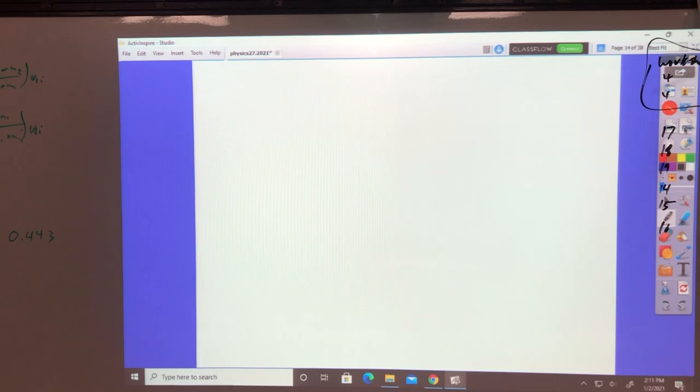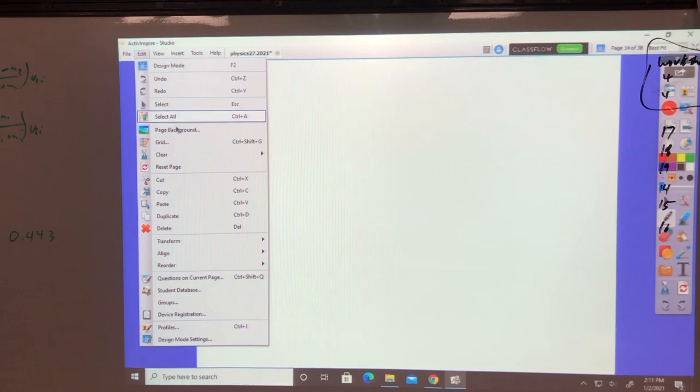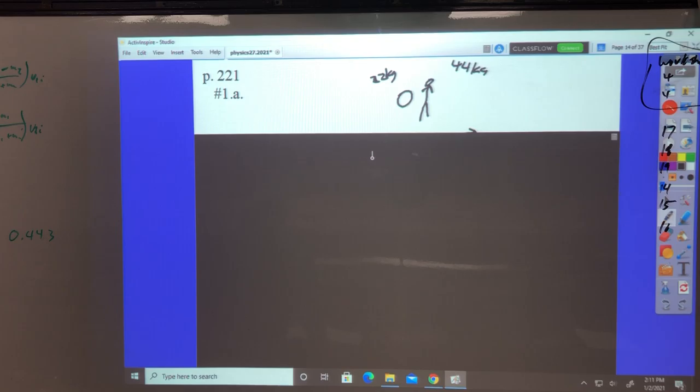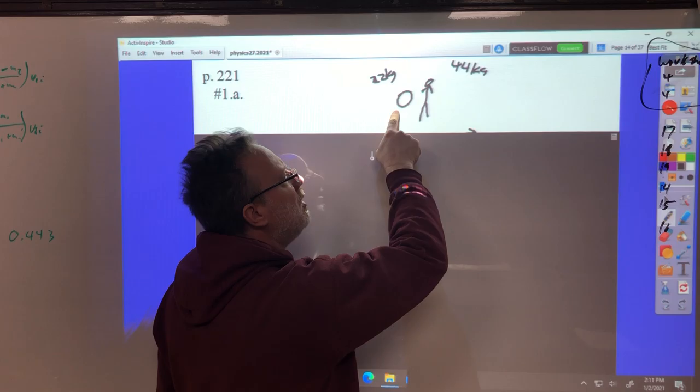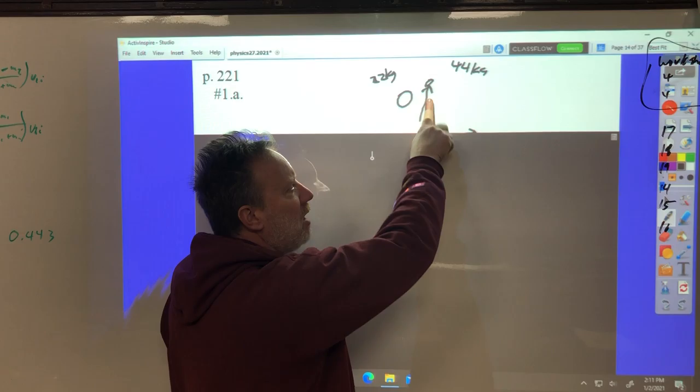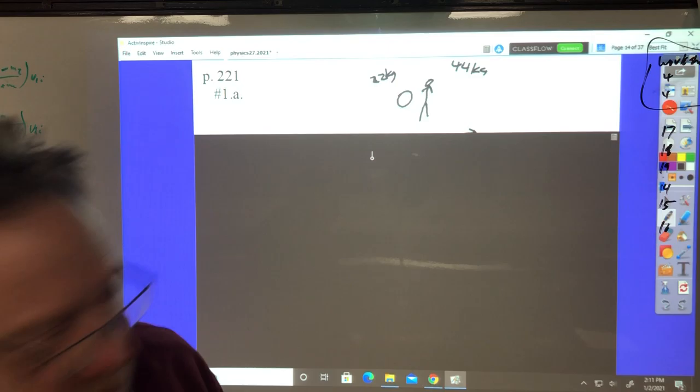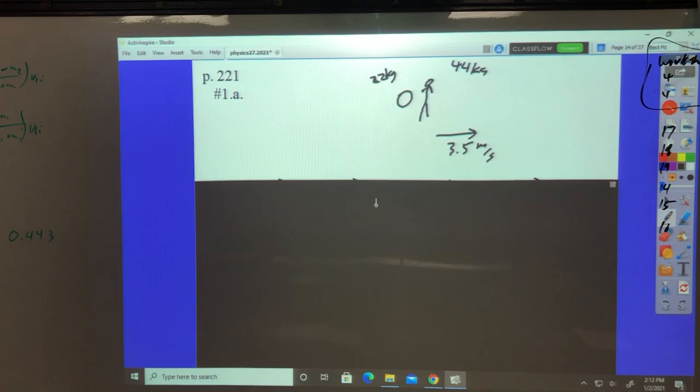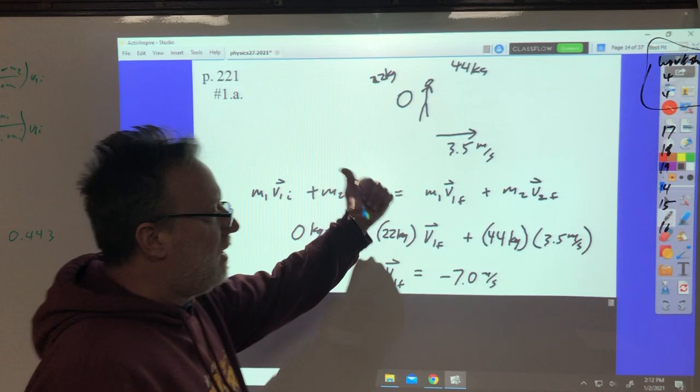Okay, let's continue with page 221, 1A. A 44-kilogram student on inline skates is playing with a 22-kilogram exercise ball, so the masses are in a two-to-one ratio. As a matter of fact, this is two-thirds of the mass. This is one-third of the mass. So I expect this to have two-thirds of the velocity change and this to have one-third of the velocity change. Student's holding the ball, both are at rest, throws the ball horizontally, causing the student to glide back at 3.5 meters per second. So the student should have one-third of the velocity change. The ball should have two-thirds of the velocity change. So when you work it out, the ball comes out to be minus seven. Exactly what we expected.